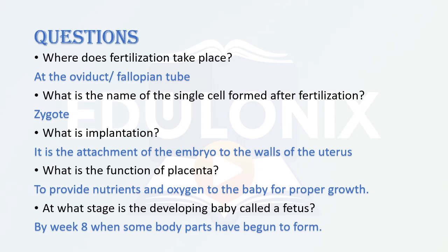That is all about today's lesson. We have learned about fertilization and implantation — what they are, how they take place, and what happens after implantation — including the growth of the baby from the zygote all the way to birth after nine months, which is called childbirth. Thank you for today's lesson. Have a nice time.